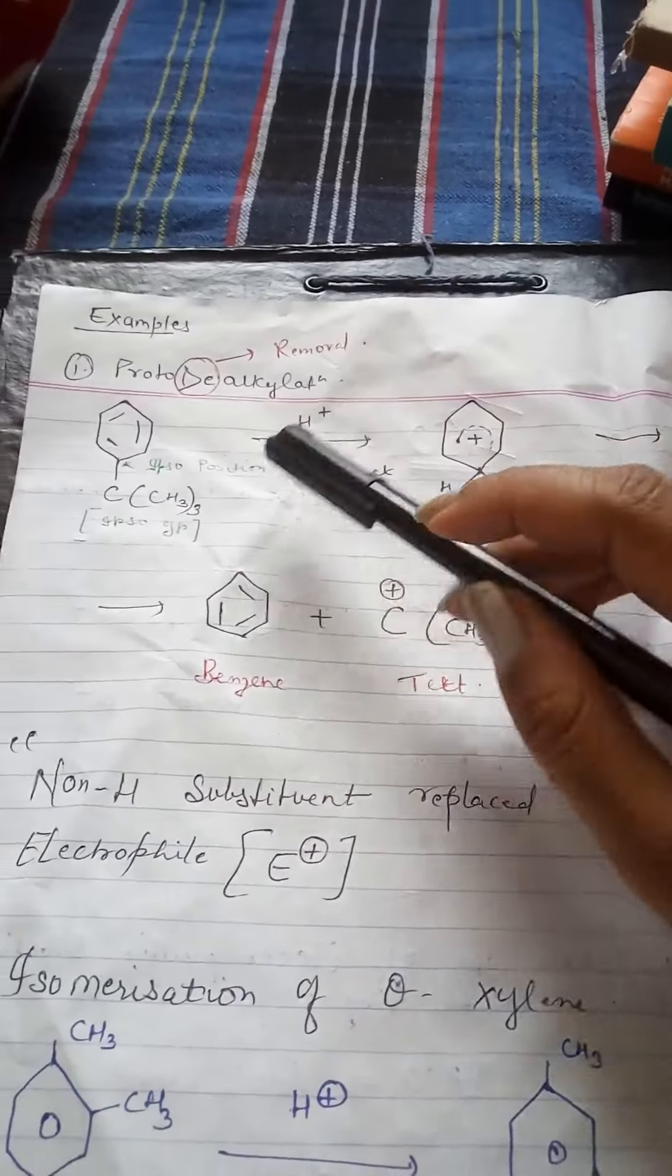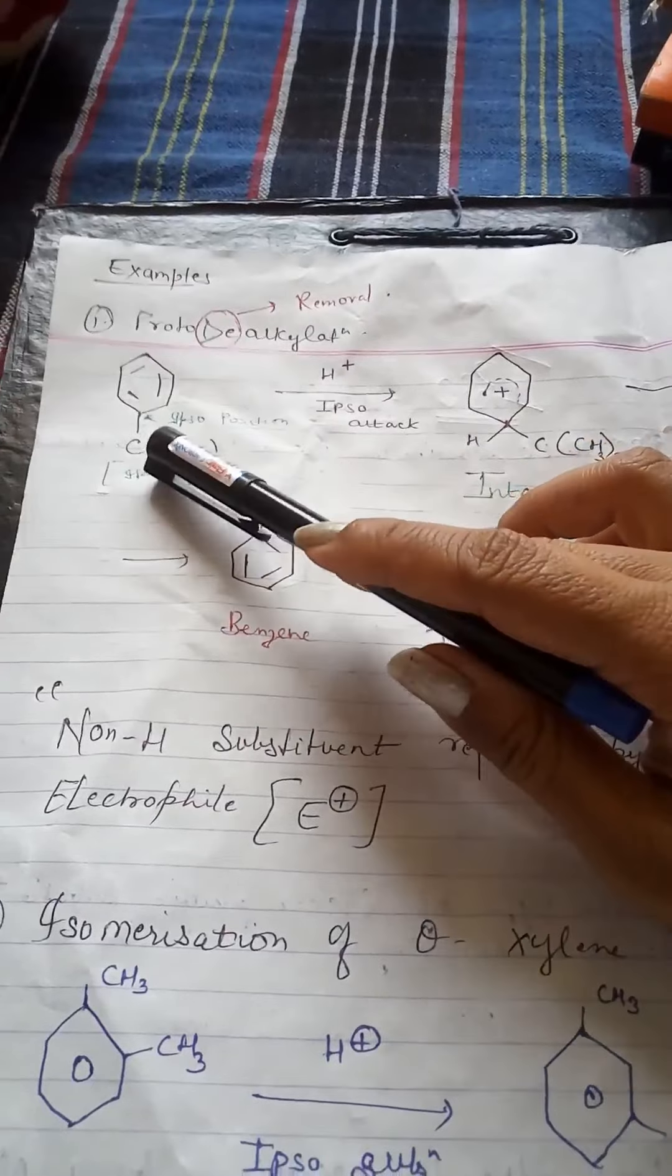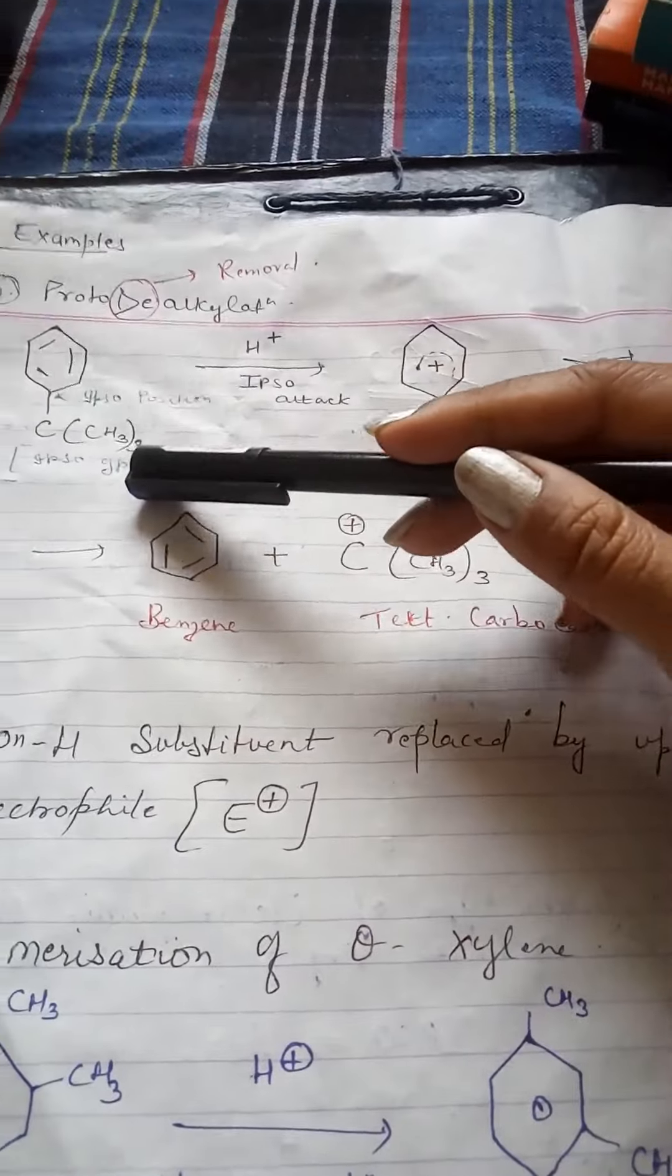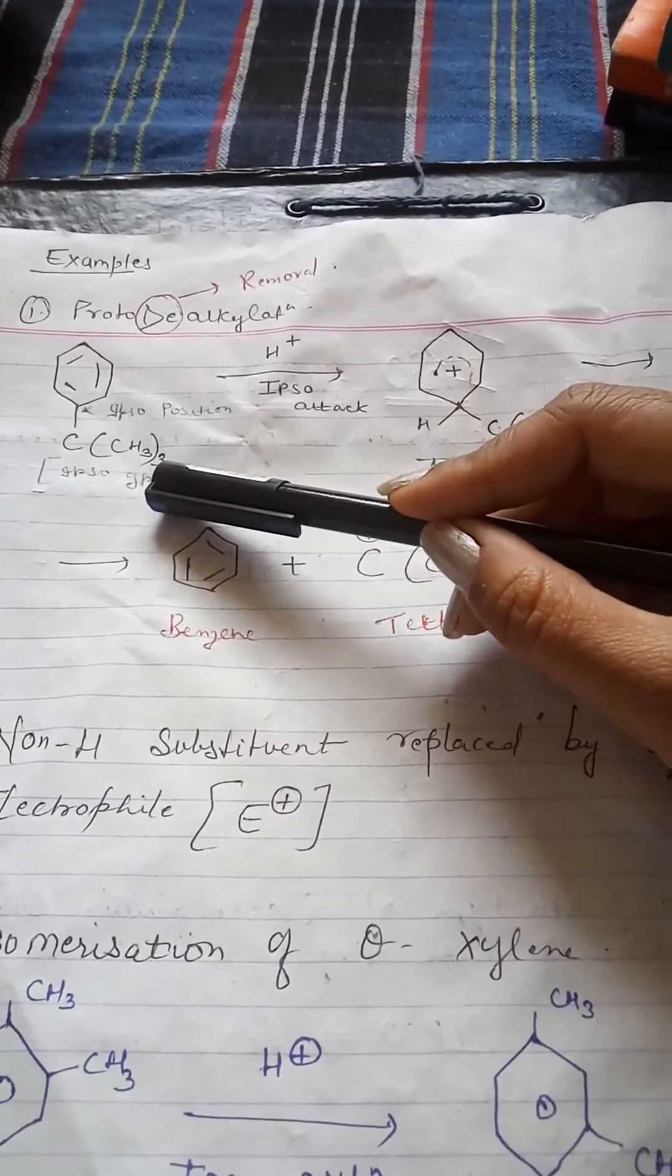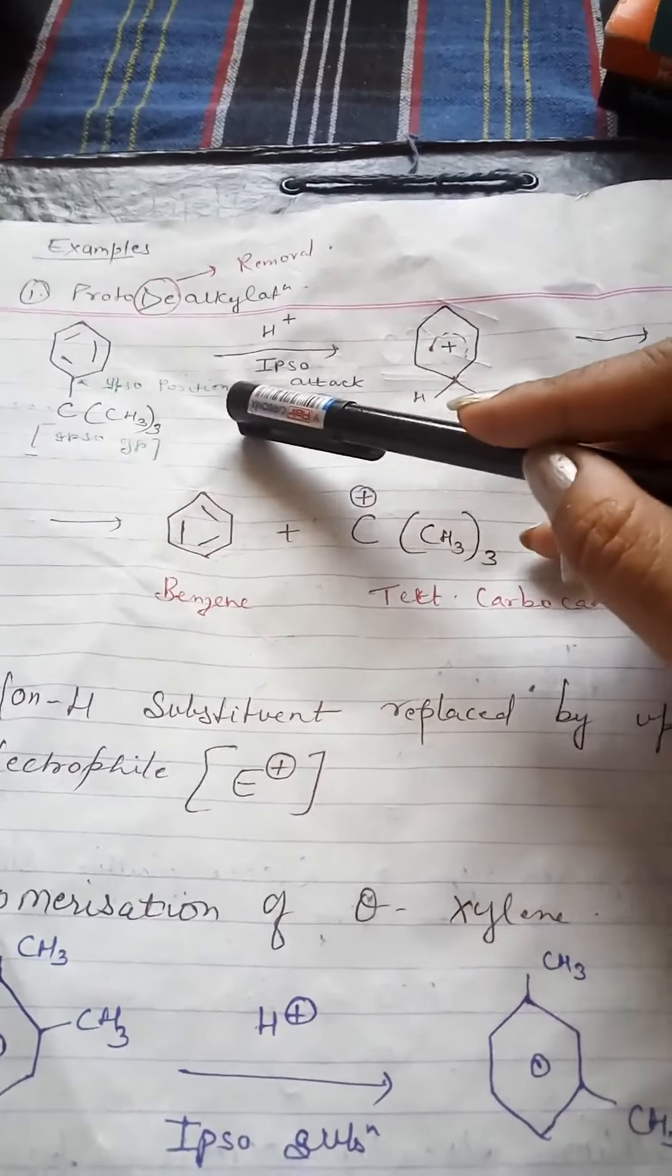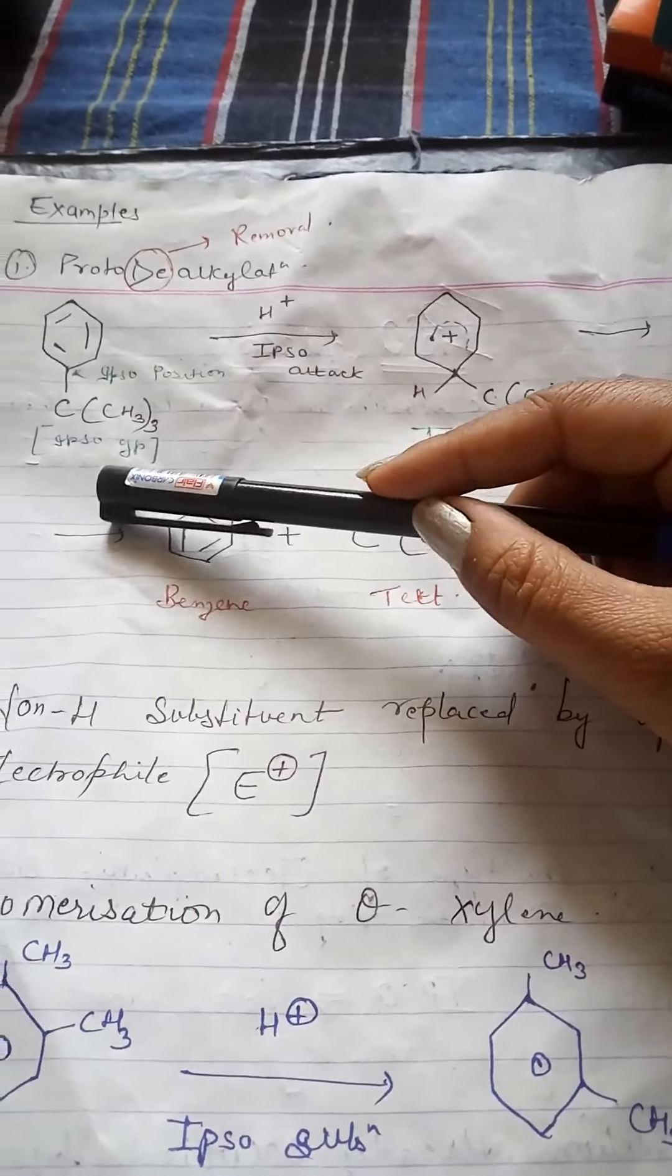So, Proto-D-alkylation how will it happen? This is your compound. Trimethyl group is attached here on carbon. So this becomes non-hydrogen bondant substituent. The position it is attached to, we call ipso position. This group we call ipso group.